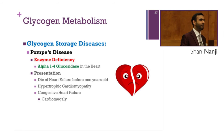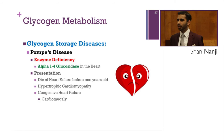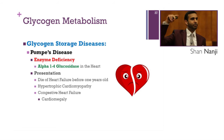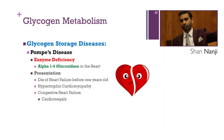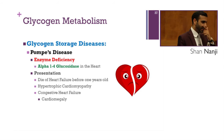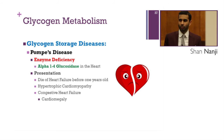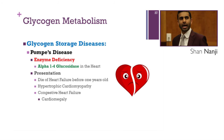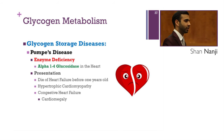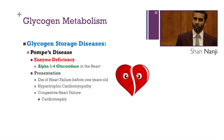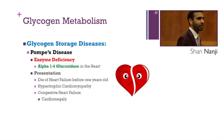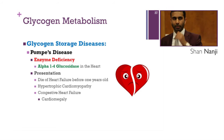Pompe's disease: the enzyme deficiency is alpha-1,4-glucosidase, which is the rate-limiting enzyme in glycogenolysis. Presentation includes death from heart failure before age one, hypertrophic cardiomyopathy, and congestive heart failure due to cardiomegaly. Signs and symptoms include exercise intolerance, wheezes, crackles, ronchi, and low energy state. Memory trick: Pompe's sounds like 'pump,' and the pump is the heart.